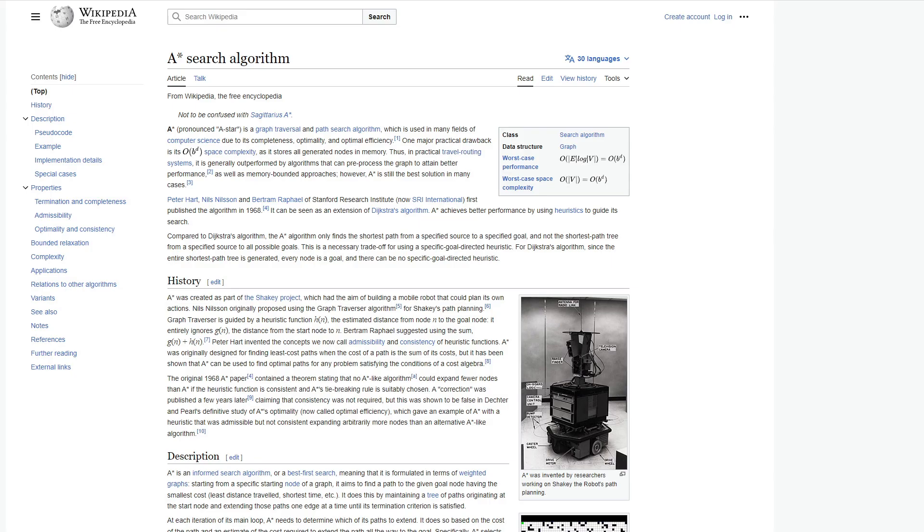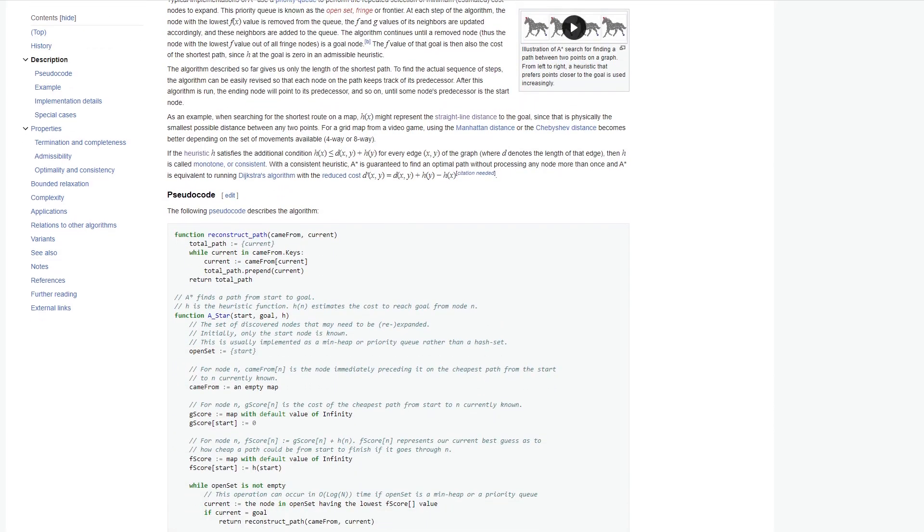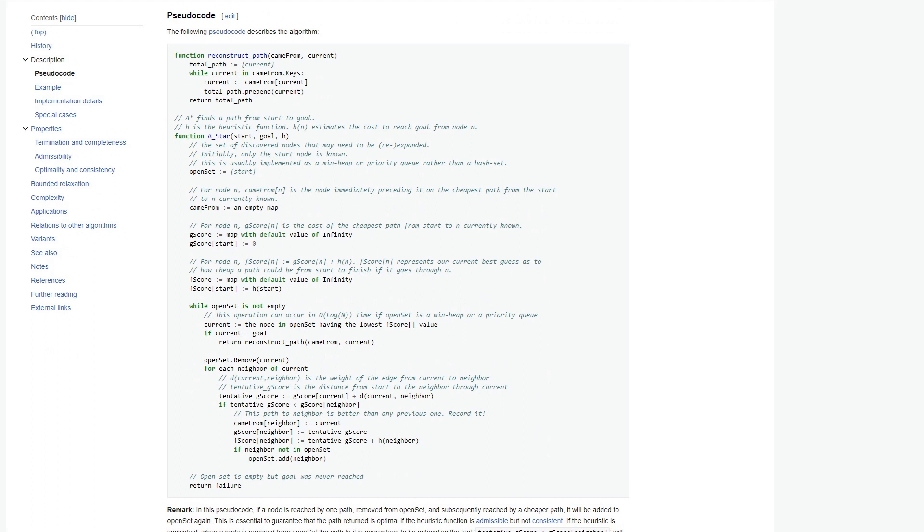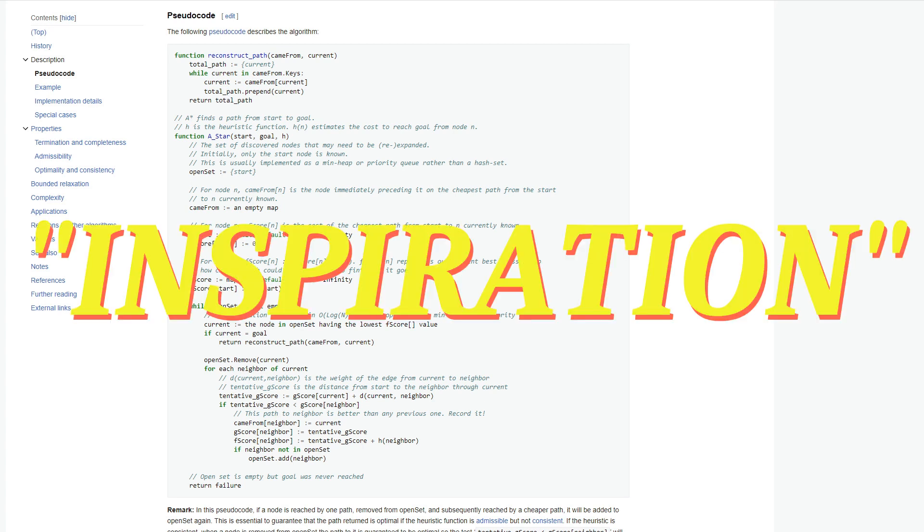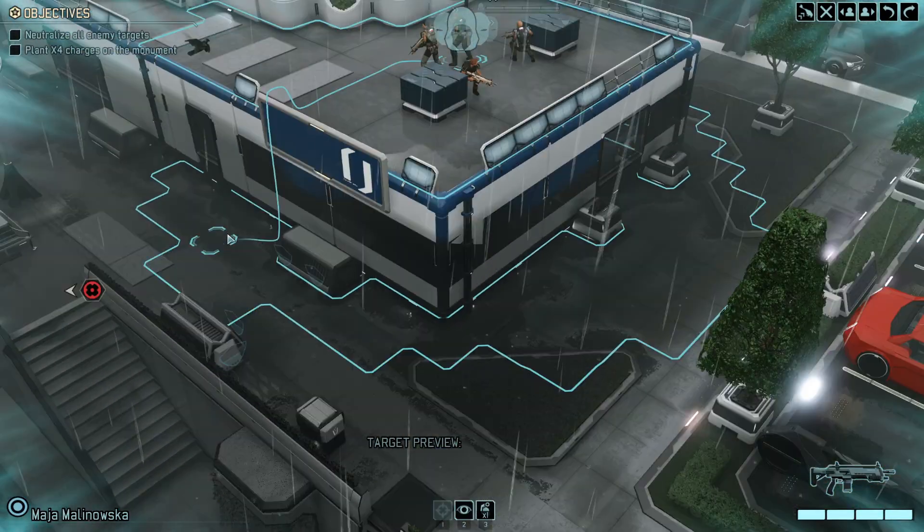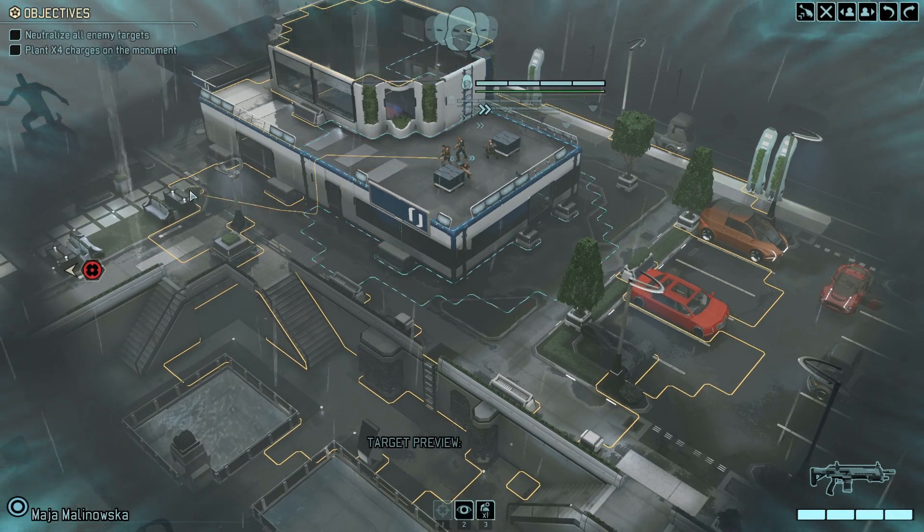The Wikipedia page for A* has a pseudocode implementation that I invite you to use for inspiration if you ever want to code it yourself. There are also thousands of repos on GitHub with A* already implemented if you need more inspiration.